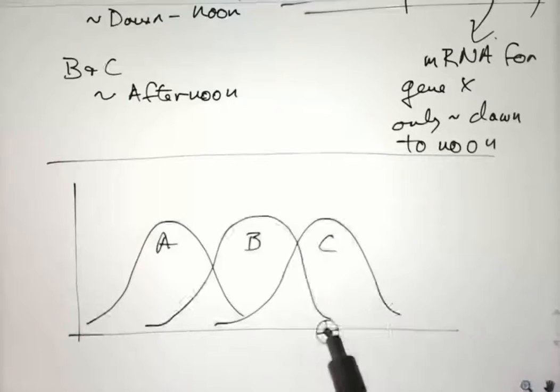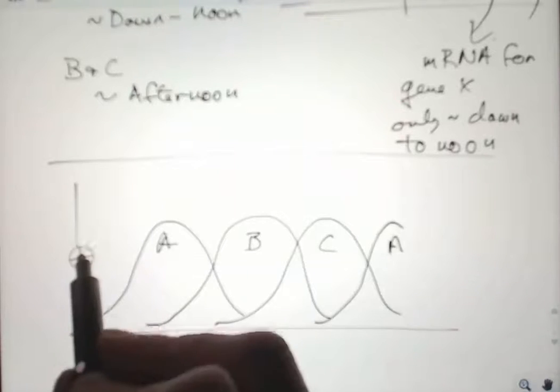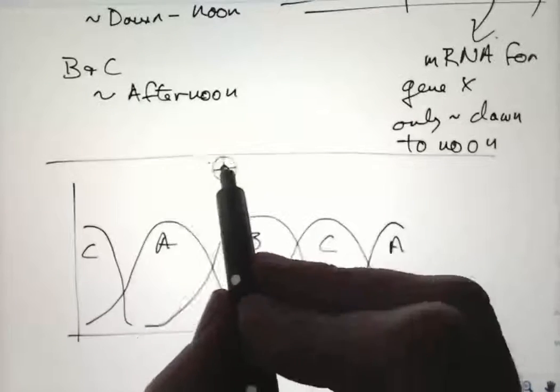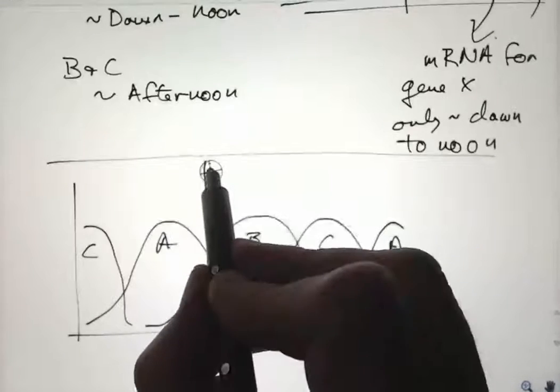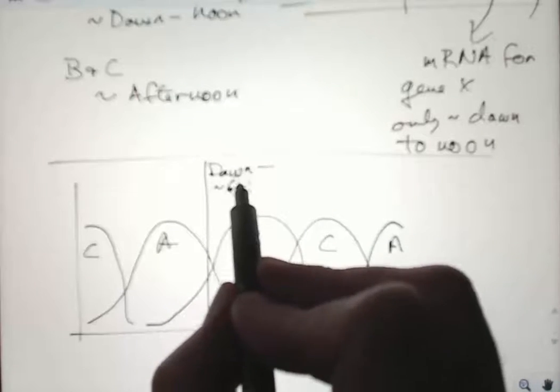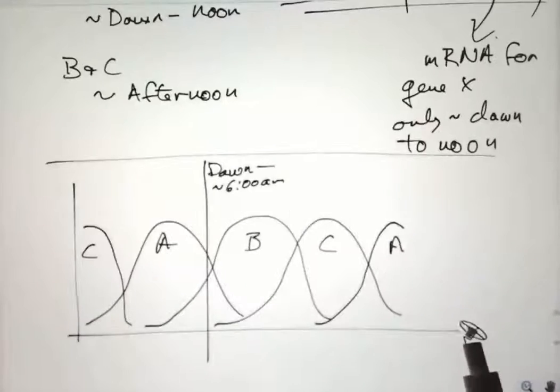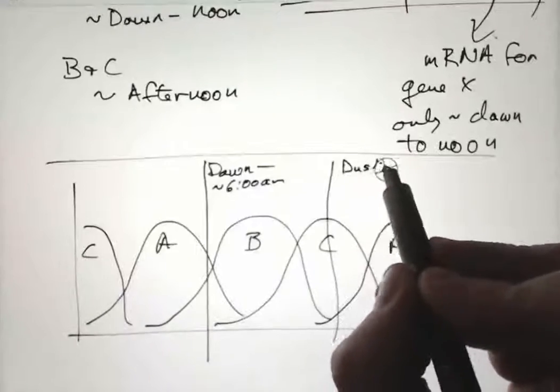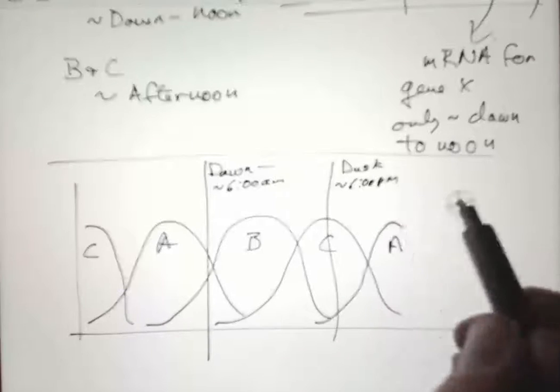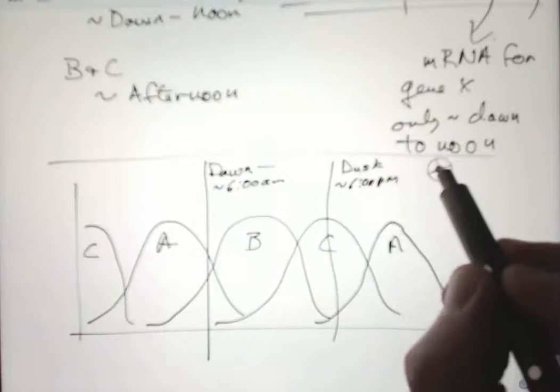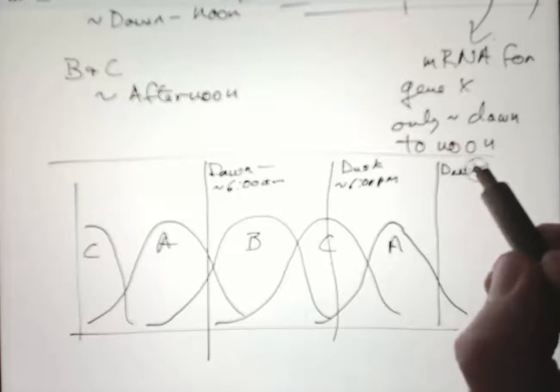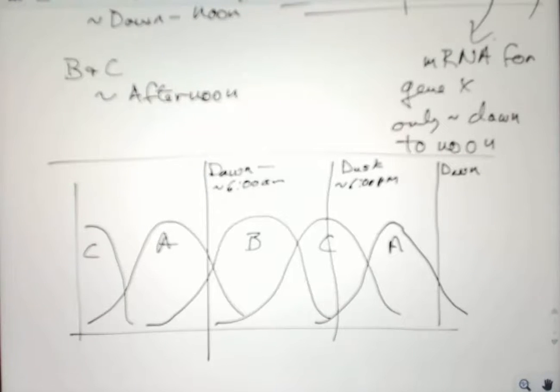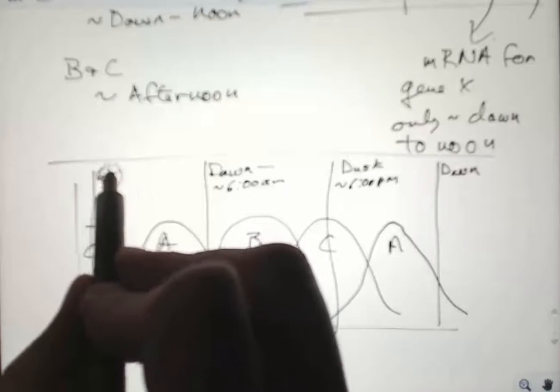Depending on how many transcription factors are involved in the timing, and of course there can be more, you get a transcription factor code. The way I've drawn it here, dawn would be as B is rising, dusk would be around the peak of C, and then the next dawn is around the time when A is declining and C is going up.